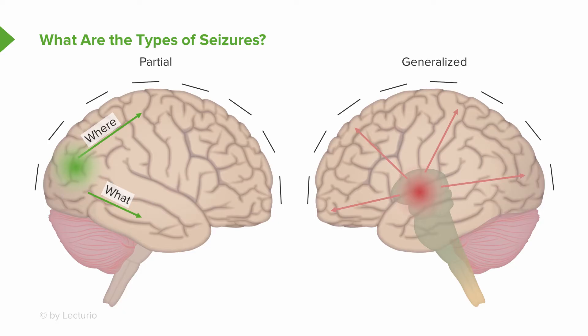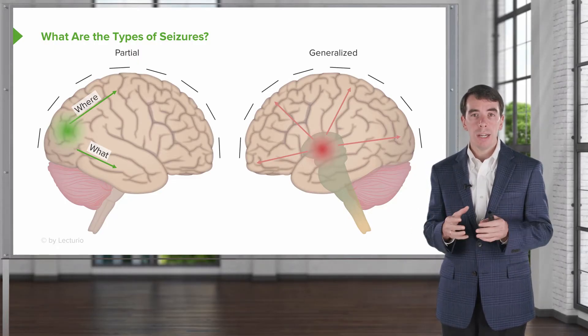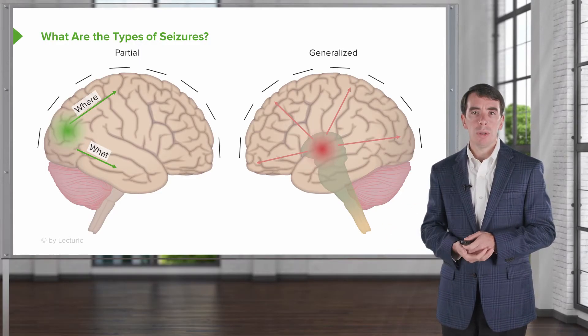In contrast, generalized seizures begin in a very deep focus. They still begin in a single area of the brain, but as you can see here in this red deep focus in the midbrain, that deep focus cannot be seen on the surface EEG in a single location. The seizure starts deep in the brain — in the thalamus — and expands out through the internal capsule and the thalamic radiations in all directions equally, so it shows up on the surface electrodes at the same time. On the EEG, it looks like it started all over the brain, or had a generalized onset. At the end of the day, the seizure is always coming from a single focus, but we categorize seizures based on how they appear on the surface EEG as either focal onset, partial onset, or generalized onset.